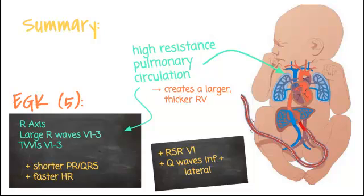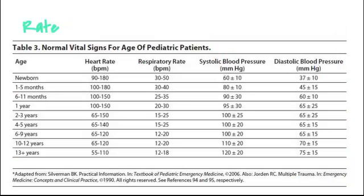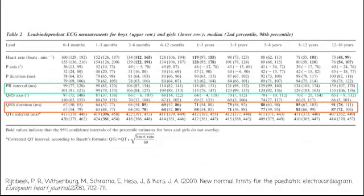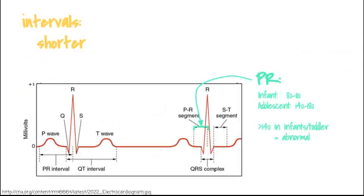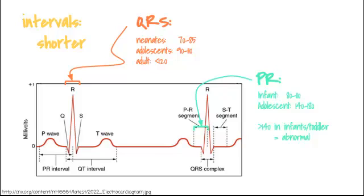Next we have heart rate and intervals. Heart rates are faster in children, and even with that faster heart rate, we see interval shortening. The PR interval in adults is normally less than 200ms; in infants it can be almost down to 80ms. In adolescents it moves more toward the adult range of 140 to 180ms. A PR over 140ms in infants and toddlers would be considered abnormal. For QRS, adults expect less than 120ms for a narrow complex; in neonates it's quite a bit shorter at 70 to 80ms, moving back toward the adult range by the teenage years.